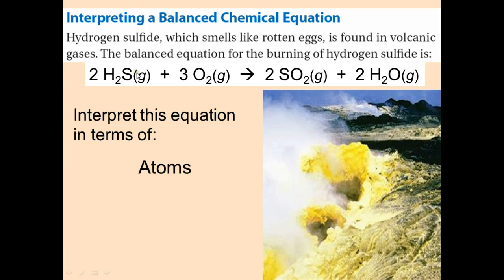Starting with atoms: each H2S molecule has 2 hydrogens and 1 sulfur, so 3 atoms per molecule. With 2 molecules, that's 6 atoms from H2S. Then 3O2 gives 3 × 2 = 6 atoms of oxygen. So the reactant side has 12 atoms total. On the product side, 2SO2 gives 6 atoms (1 sulfur + 2 oxygen × 2 molecules), and 2H2O gives 6 atoms as well — so also 12 atoms. Since atoms are always conserved, once we find one side we know the other.